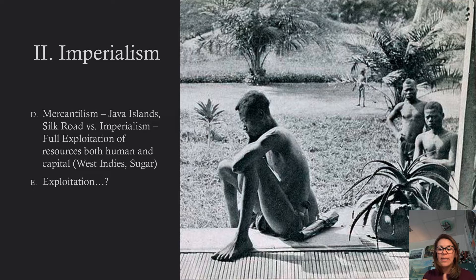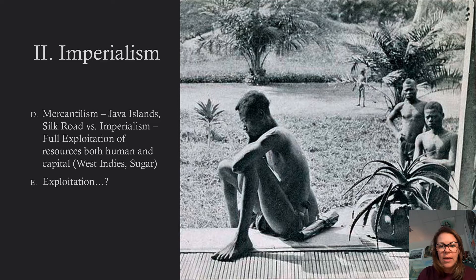This photograph was taken by Alice Seely Harris. The man seated there is named Nsala. Here is part of Alice Seely Harris's account from her book 'Don't Call Me Lady: The Journey of Lady Alice Seely Harris': 'He hadn't made his rubber quota for the day, so the Belgian-appointed overseers had cut off his daughter's hand and foot. Her name was Boali. She was five years old.'